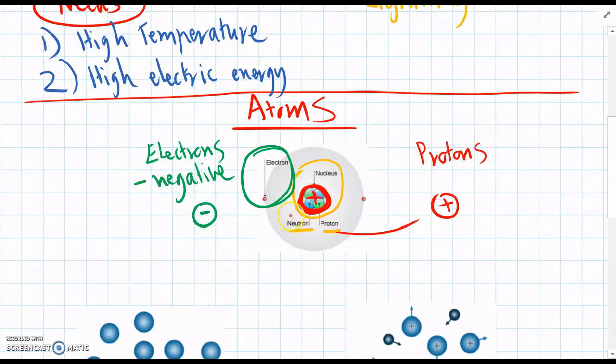Because neutrons, they have no charge, so we can ignore them for now. So the middle, the nucleus is positive, and all around the outside, in this cloud, where the electrons are flying, that's all negative.